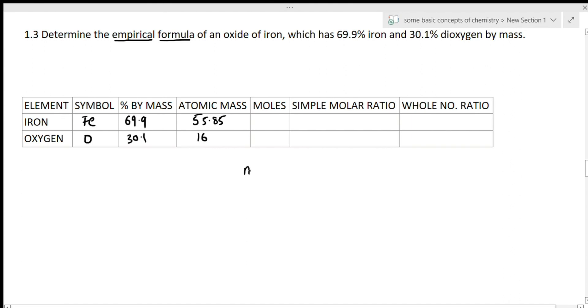The number of moles of iron will be: given mass is 69.9% and atomic mass is 55.85. If you simplify, approximately you could take it as 70 and 55 because the division will be hard otherwise. So approximately the answer that comes is 1.25 moles.